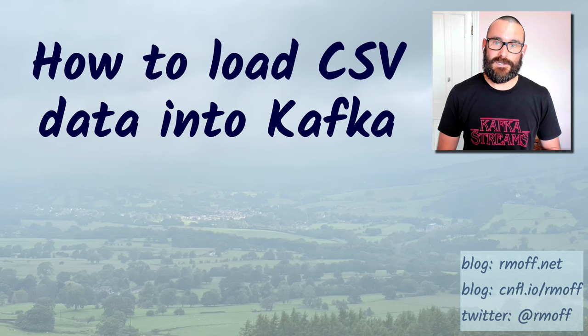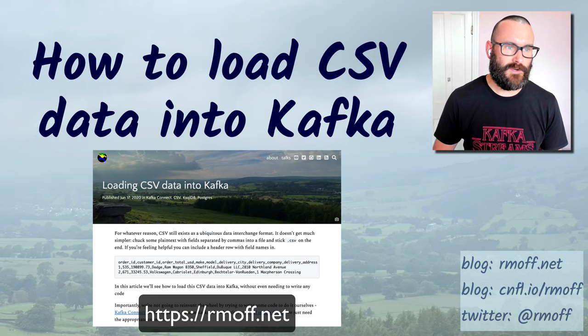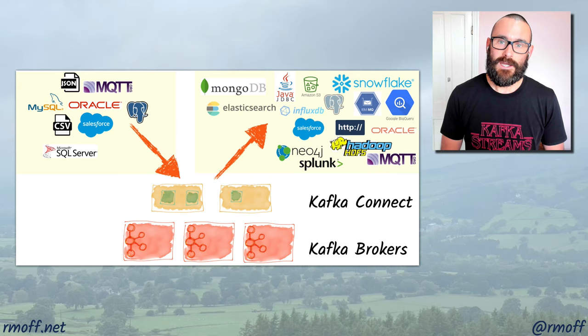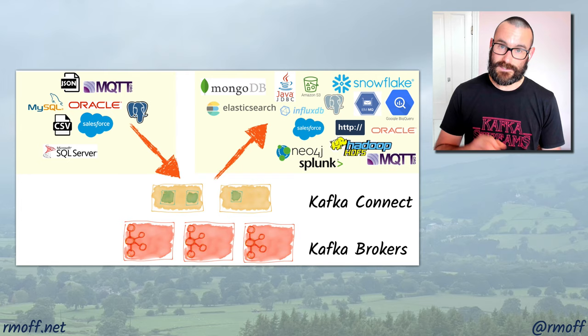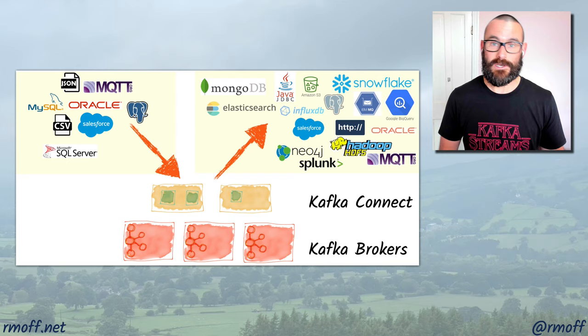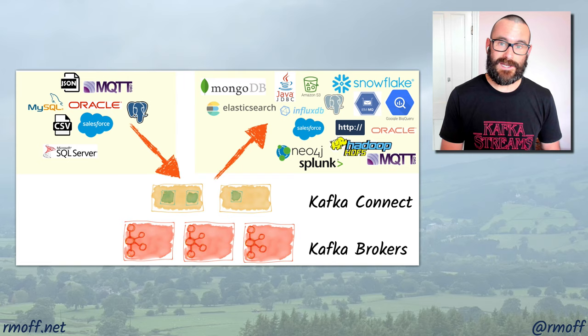There's a blog post about this if you prefer reading. If you prefer watching, let's walk through it. First, we find the appropriate connector — it's called Kafka Connect SpoolDir. It lets you read flat files like JSON or CSV from a file system and stream them into a Kafka topic. Kafka Connect is part of Apache Kafka and is the integration API — it lets you take data from a system and stream it into Kafka, or take data from Kafka and stream it out to another system.